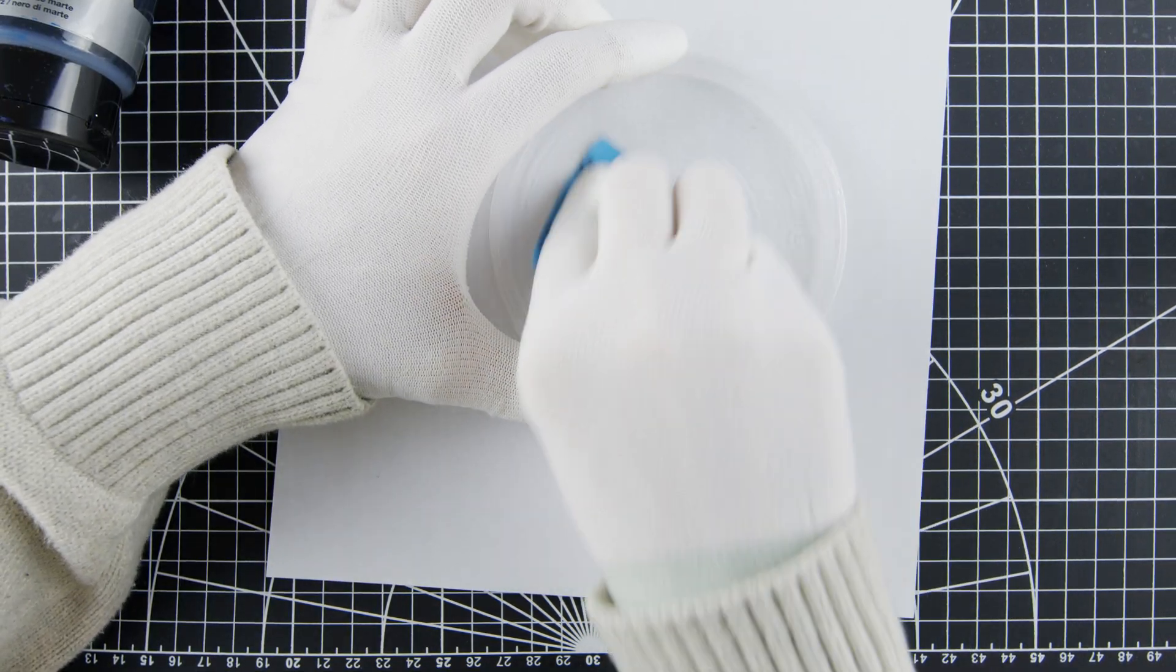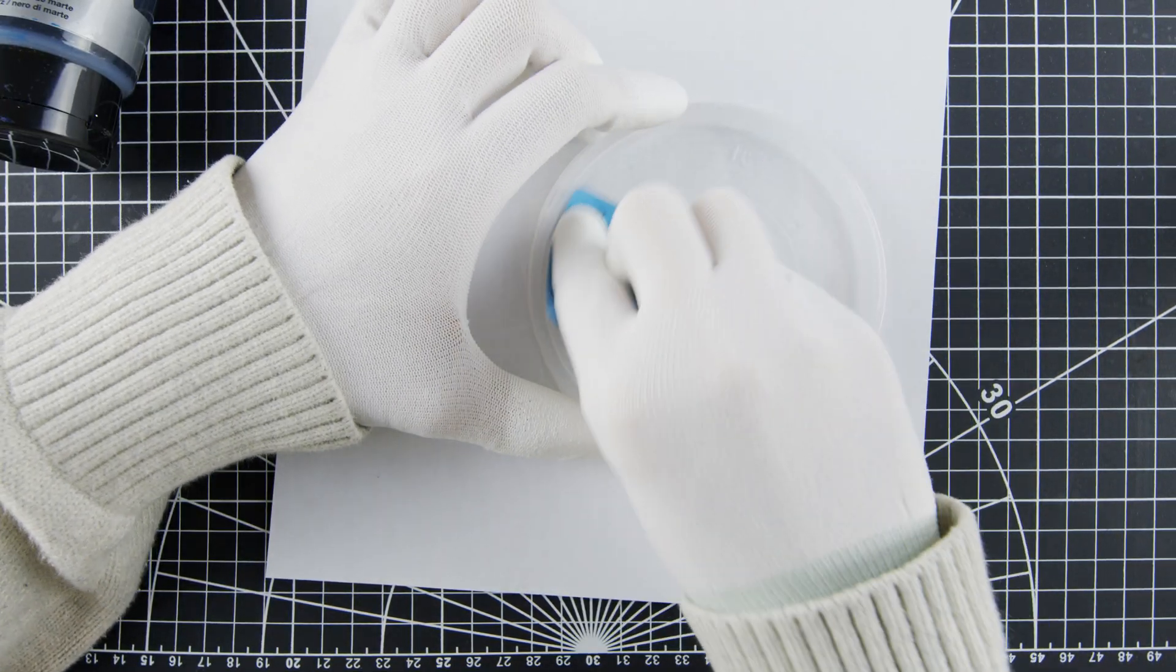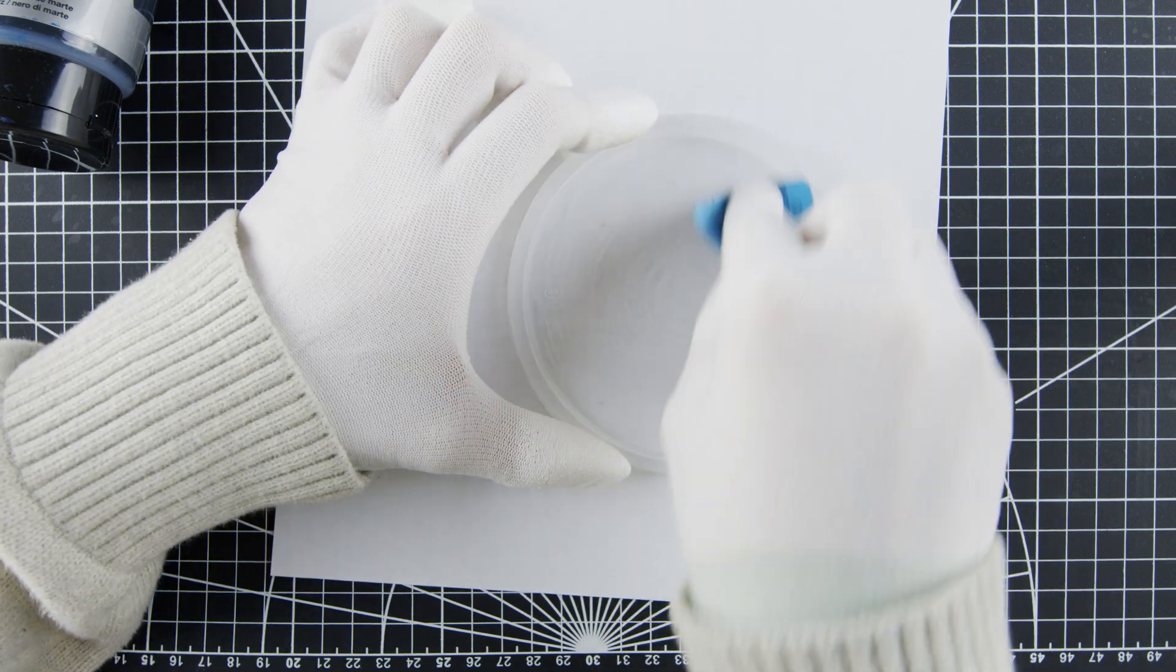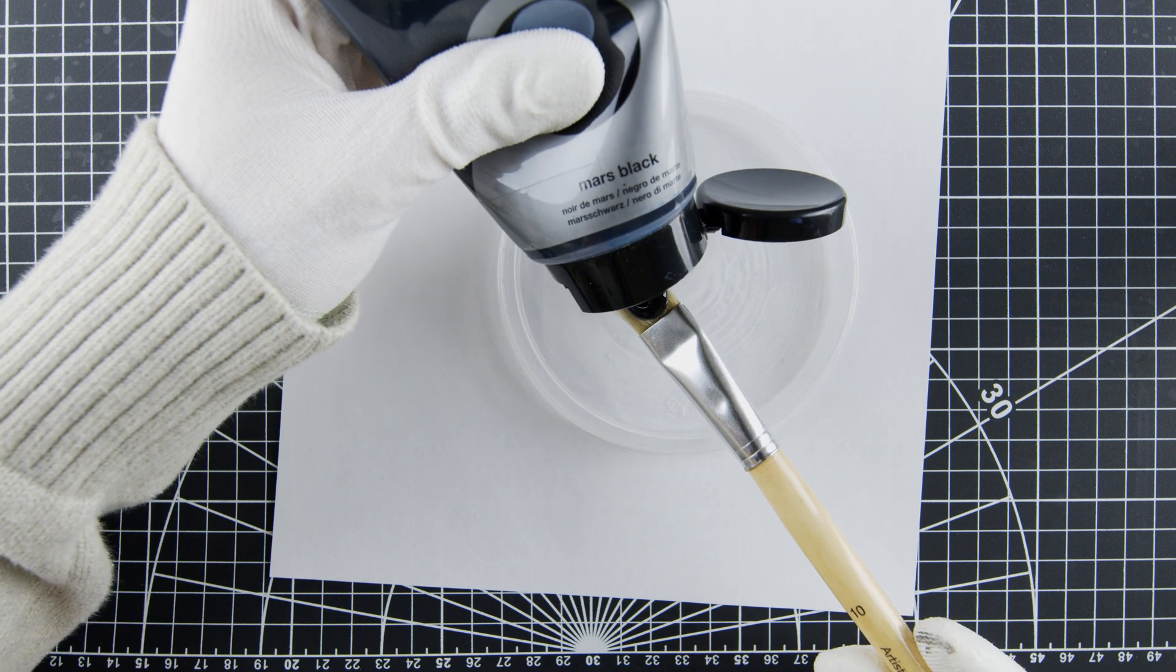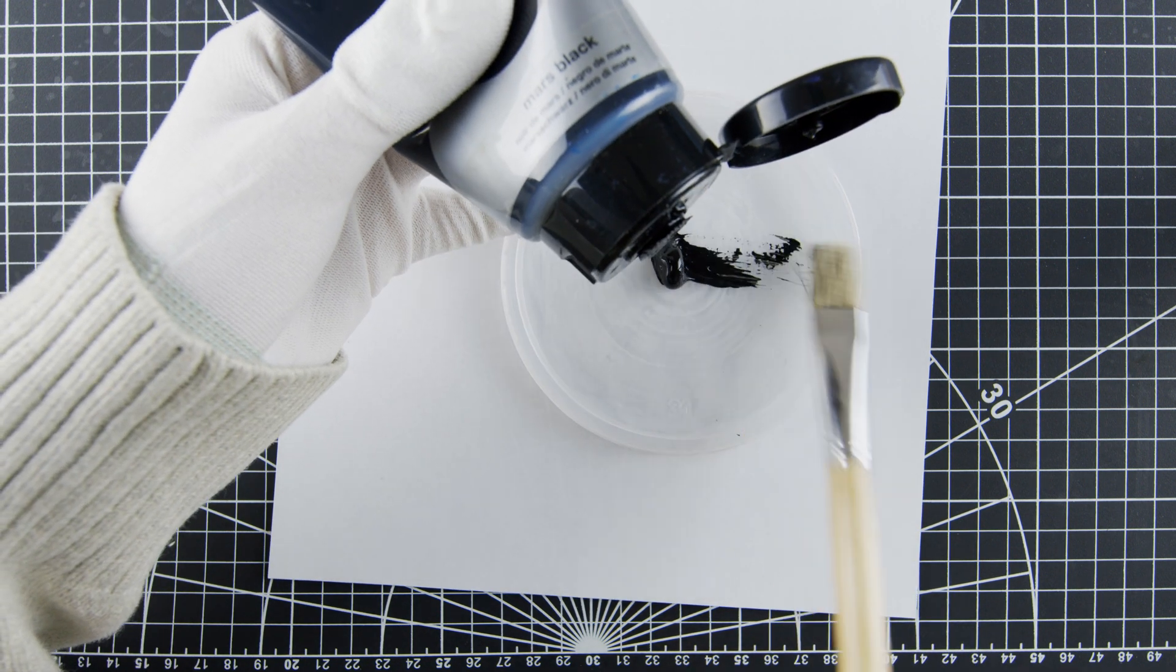First, we'll paint the plastic lid. Before doing so, I lightly sanded the surface with 800 grit sandpaper to improve paint adhesion. You might need to apply multiple coats of paint to achieve the desired consistency.